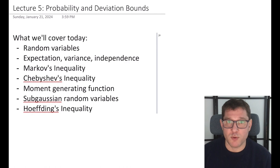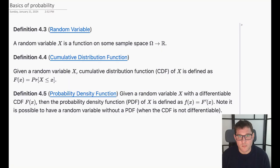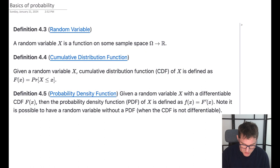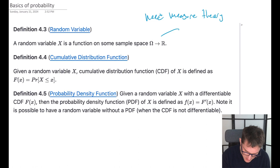We'll also talk about moment generating functions and sub-Gaussian random variables, which is a concept used in the proof of Hoeffding's inequality. A big part of this class is going to be trying to understand randomness and we're going to use lots of random variables throughout this course. I don't really want to go through the full foundations of probability — that requires an entirely other course — but I'll be using terms like random variable and I generally expect you to know what that means.